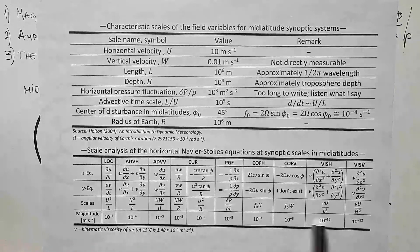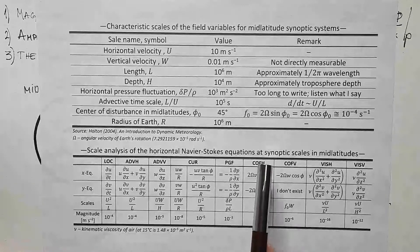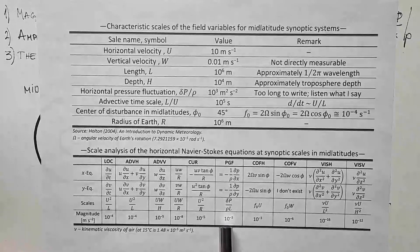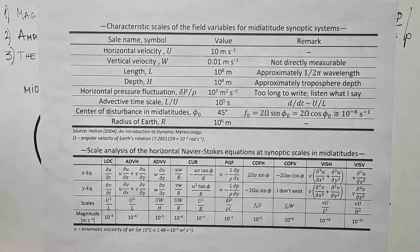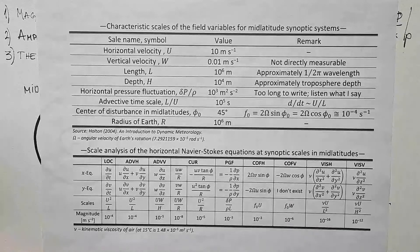All these have units of acceleration, force per unit mass, namely. Horizontal Coriolis force has the same scale as the pressure gradient force, whereas the vertical component of the Coriolis force has much smaller magnitude. Three orders of magnitude smaller.